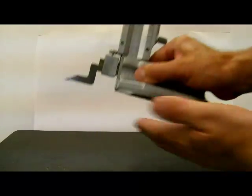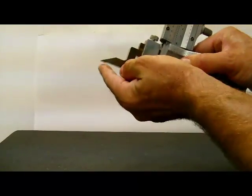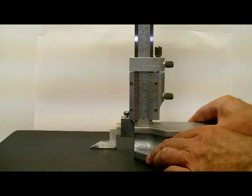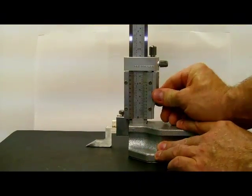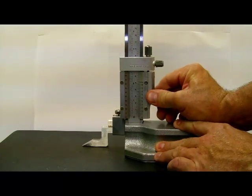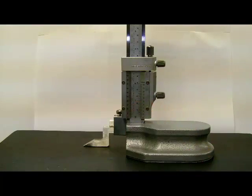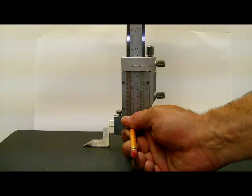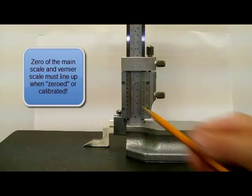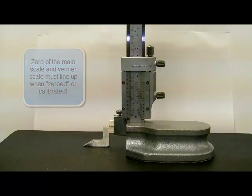Before we do anything we want to make sure the base is clean, the tip is clean, the table is clean. And then what we'll do is we will set the tip down on the table. We will get in line with the scale and check the reading and make sure that it is zero.